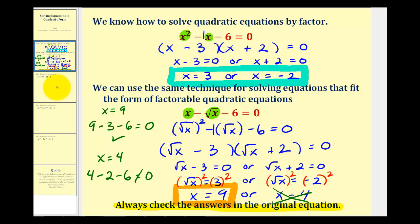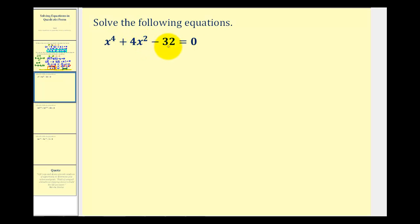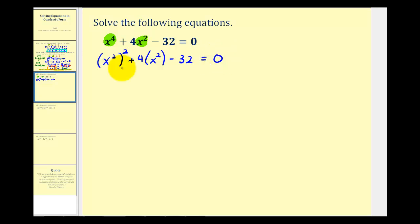Let's look at more examples. Here we have x to the fourth plus four x squared minus 32 equals zero. The first step is to check if it fits the form of a factorable quadratic — if we square x squared, we get x to the fourth, so it does. We can write this as x squared, quantity squared, plus four times x squared minus 32 equals zero. Sometimes textbooks use a u substitution, but as long as you recognize the form, there's no need for that substitution.